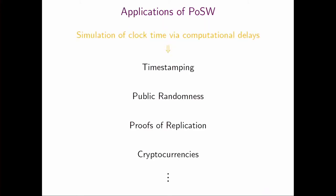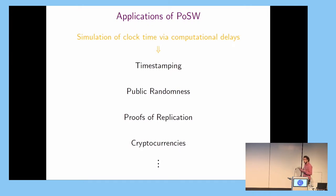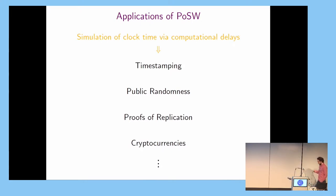Why do we care about proofs of sequential work? They have many applications, old and new. The motivation for our work was some application we wanted to do for cryptocurrencies, which I'll sketch towards the end. In all of these applications, you use computation and delays to reason about time in real life — that's the main idea.